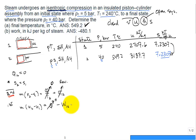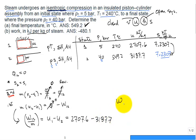Now we can go to our first law and find the work. They're asking us to solve for work 1 to 2 divided by mass. That's U1 minus U2: 2707.6 minus 3187.7. The work per unit mass equals negative 480 kilojoules per kilogram.